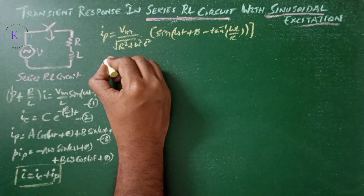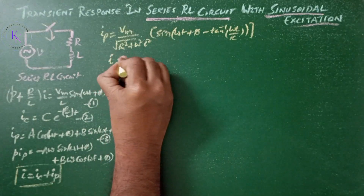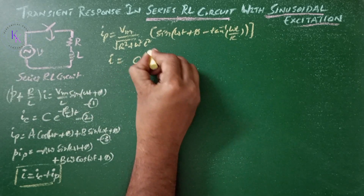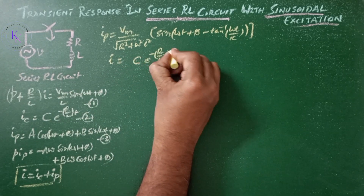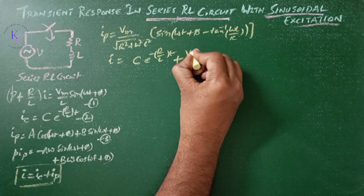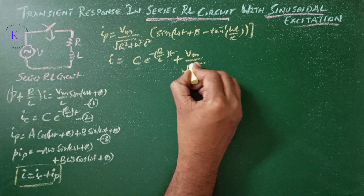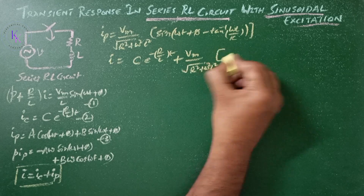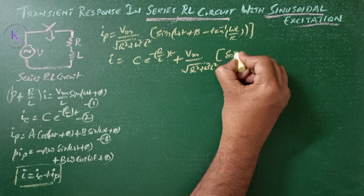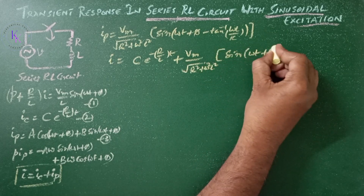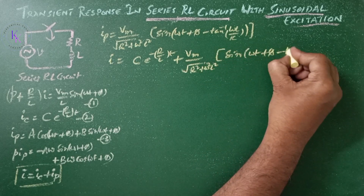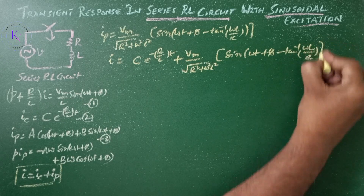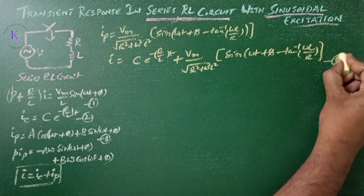The complete solution is I = Ic + Ip: I = C·e^(−R/L·t) + Vm/√(R² + ω²L²)·sin(ωt + φ − tan⁻¹(ωL/R)). Let this be equation number 6.